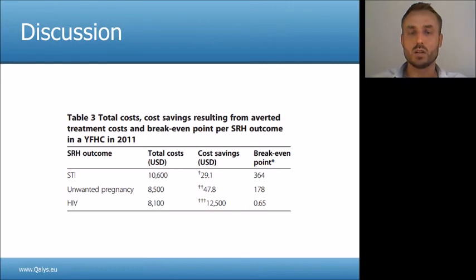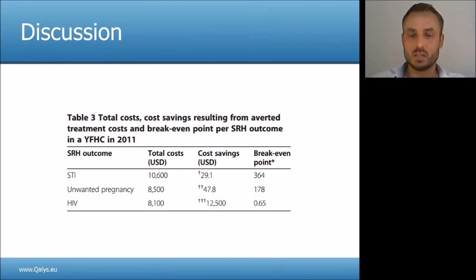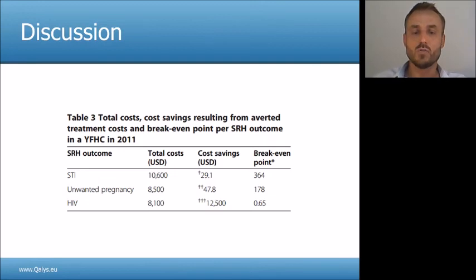This table summarizes the total cost of services, cost savings resulting from averted treatment costs, and break-even points per sexual reproductive health outcome. The number of STIs required to be averted is relatively high — 364 — because STI treatments are typically low cost and the long-term cost consequences of non-treatment are limited. The break-even point for unwanted pregnancies is lower at 178, driven by the cost of carrying a pregnancy to term and delivery assistance, which are approximately five times higher than the cost of a medical abortion. Most importantly, very few new HIV infections — only 0.65 — would need to be averted for the HIV services to break even, because the long-term cost consequences of new HIV infections are substantial.